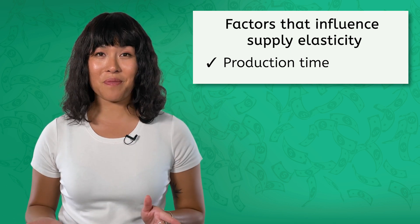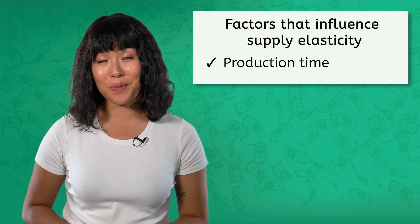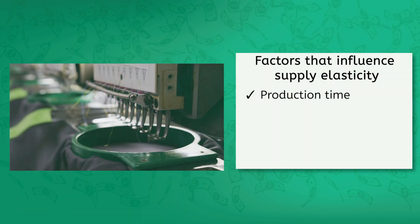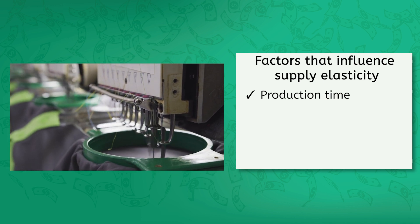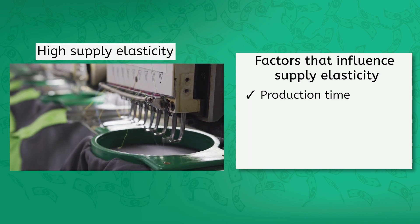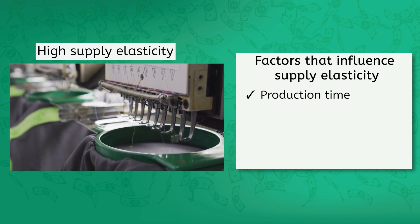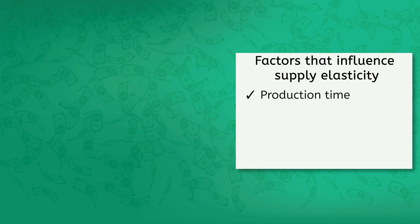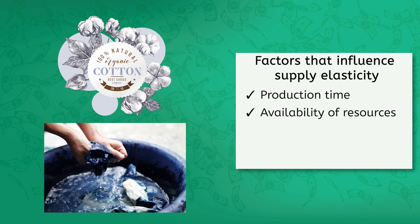Now that we've identified some of the factors that affect demand elasticity, let's talk about the factors that affect supply elasticity. Production time is a big factor — some goods and services are quicker and easier to produce. For example, books and clothes are relatively simple and fast to produce. So those jeans you were looking to buy would have high supply elasticity; the company could make more pretty quickly if the price increased. Another consideration is the availability of resources. You could have the most efficient way of making jeans, but if you can't easily get more cotton or dye, you can't quickly produce more. The more quickly and easily you can obtain the necessary resources, the more elastic your supply can be.